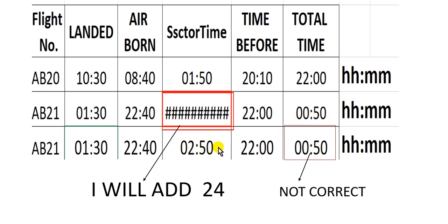The total time must be: 50 plus 0 equals 50 minutes, and 2 plus 22 equals 24 hours. But where is that 24? The cell is not showing it correctly. This is another problem I need to solve.